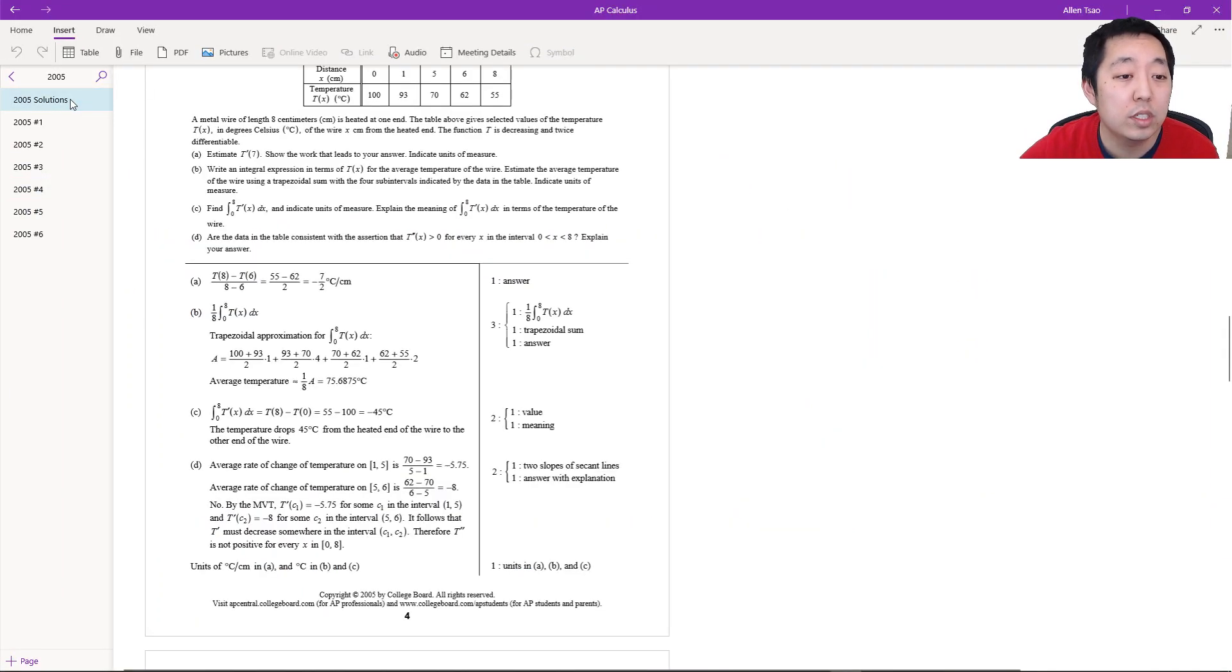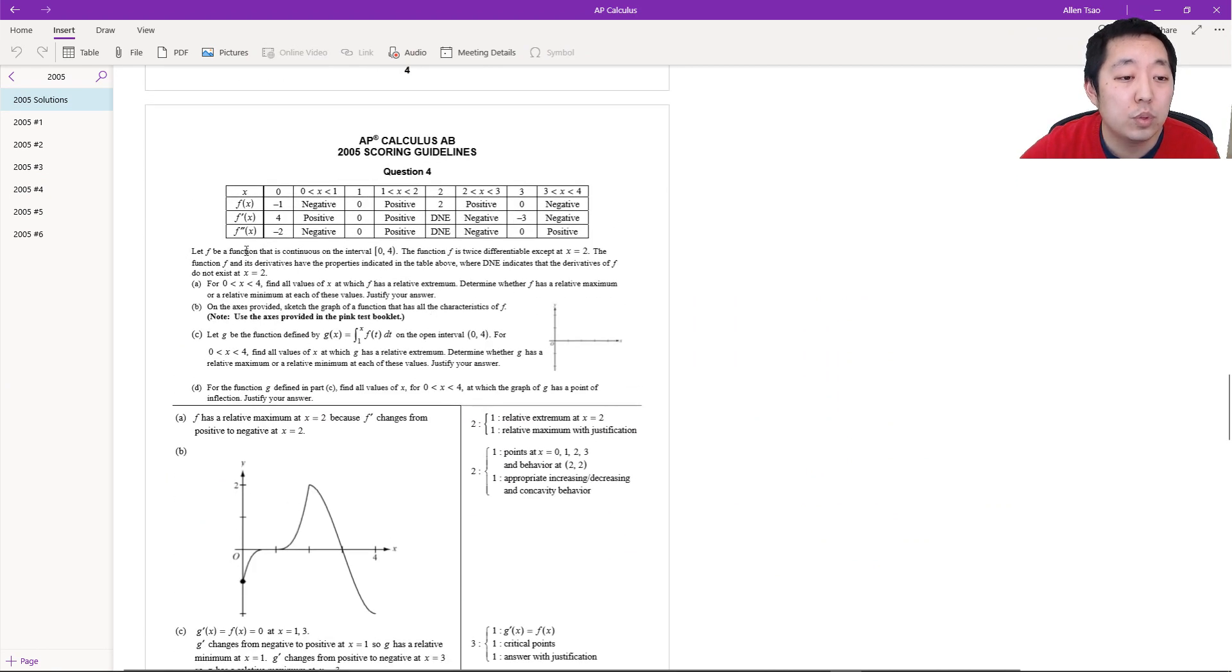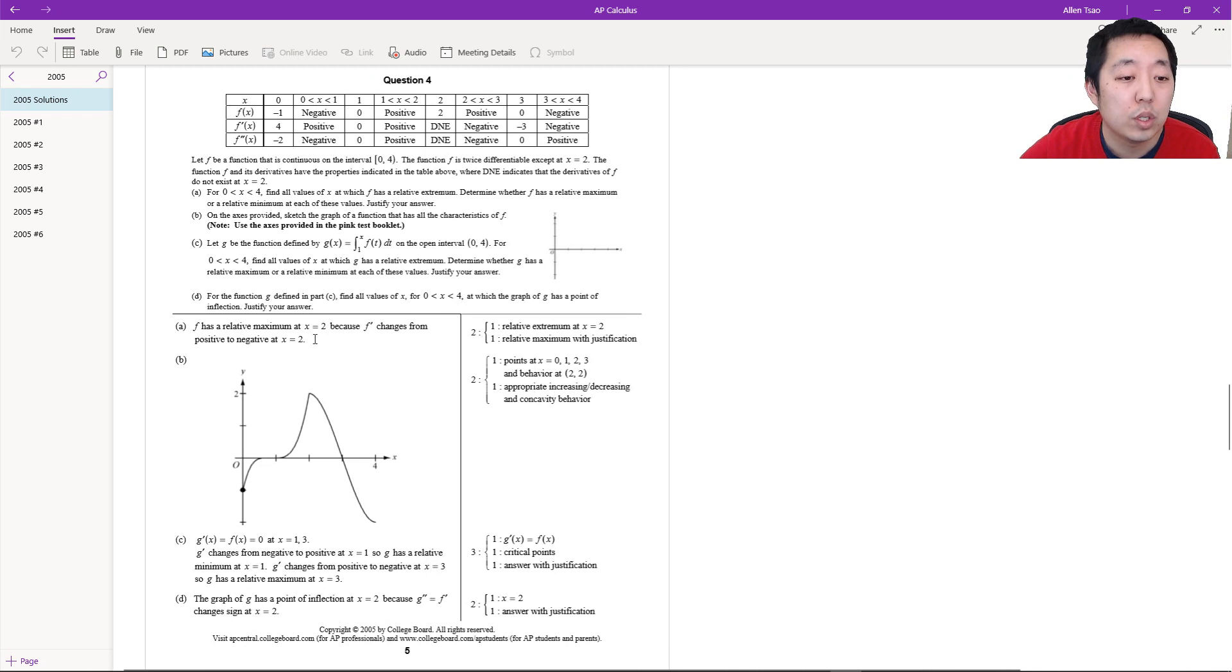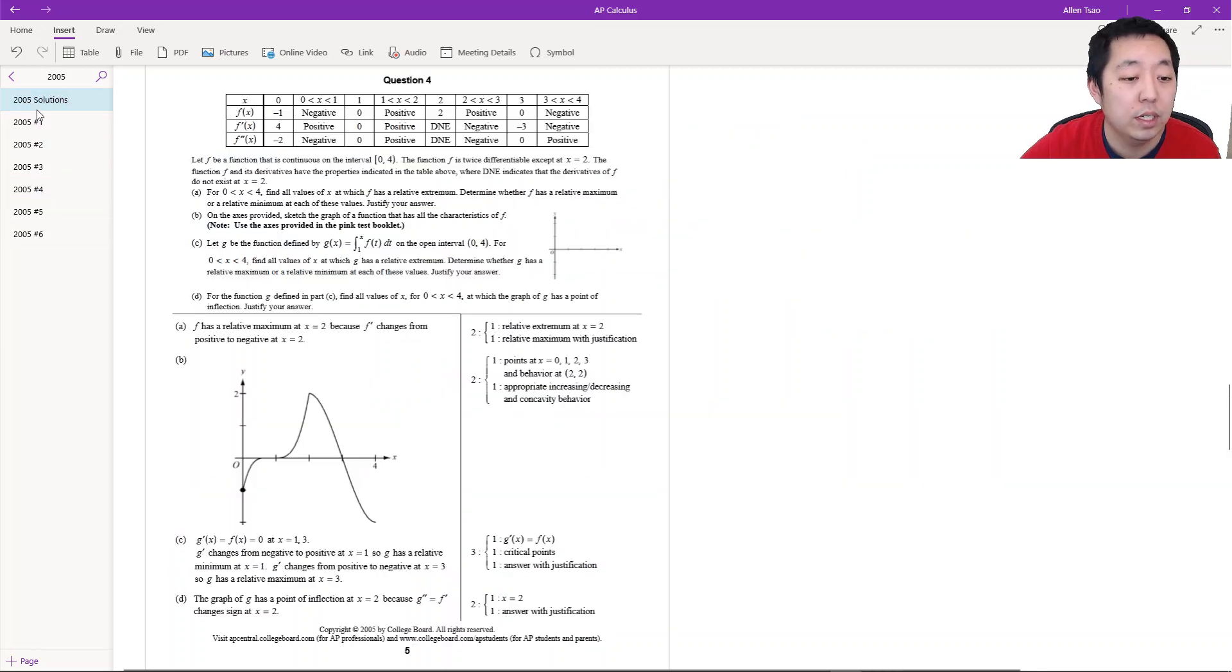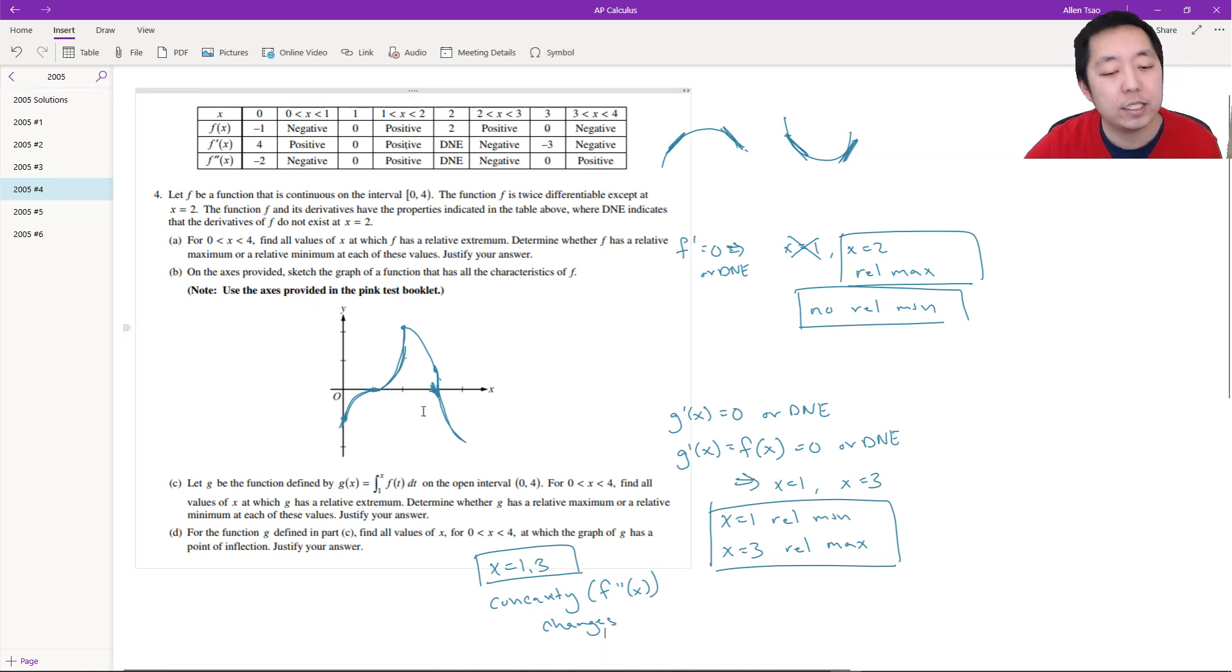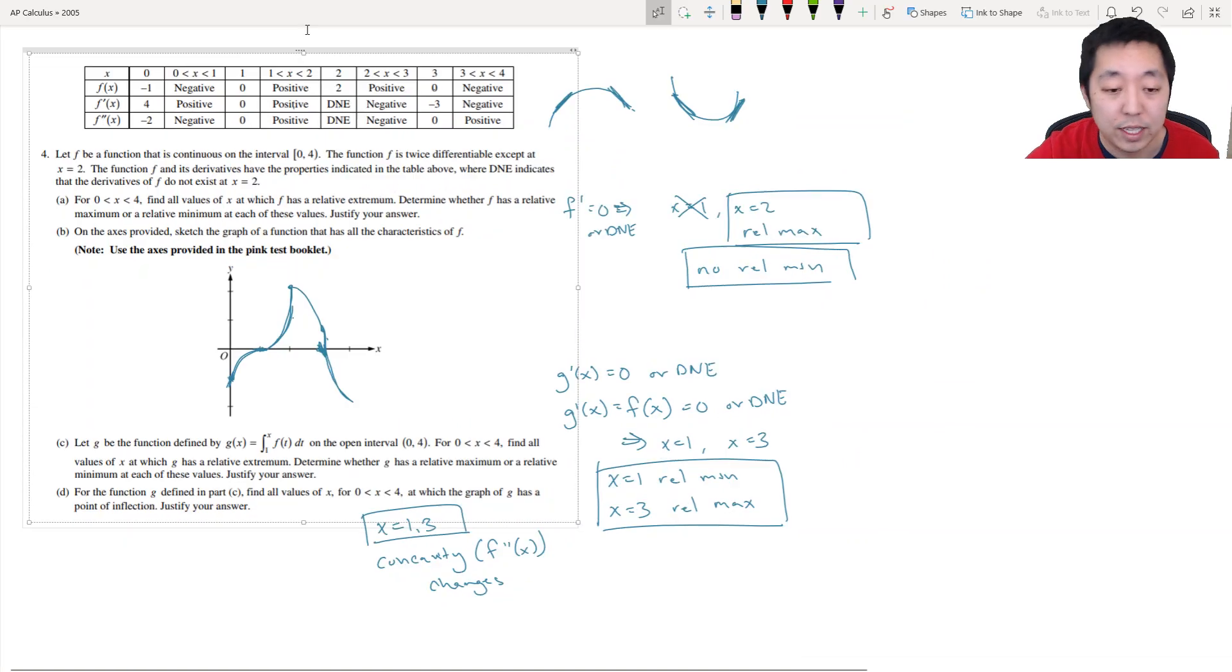Let's take a look at the solutions. Relative max at 2. That looks pretty good. Looks similar to what we drew. Relative max at 3 and relative min at 1. Is that what I said? Relative min at 1, relative max at 3. Good. And then points of inflection at... Oh, crap. They were asking for points of inflection of g, not f. So that's my mistake. I don't know why I messed that part up.